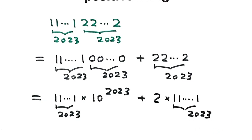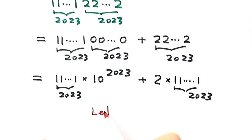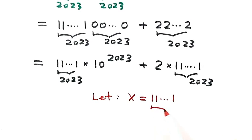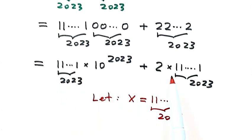Since we have this number here and here, so we can let X equals this number. So let X equals 2023 ones. So then we're going to do substitution. So use X, replace here and here.